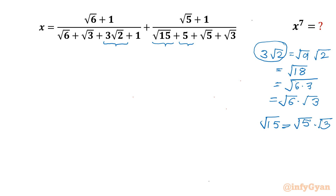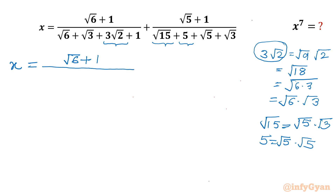5 can be written as √5 times √5. So our expression x will be (√6 + 1) over (√6·√3 + 3√2 + √6 + √3 + 1), which gives (√6 + 1) over (√6·√3 + √6·√2 + √6 + √3 + 1).